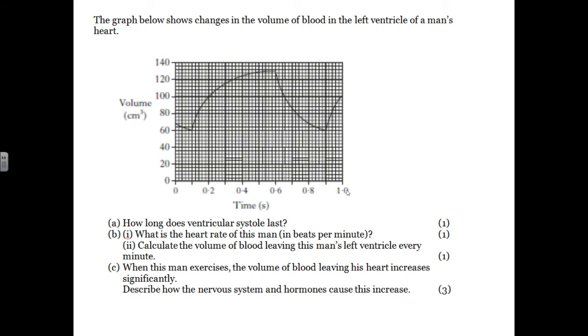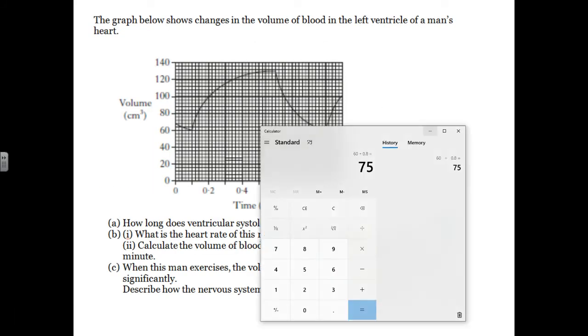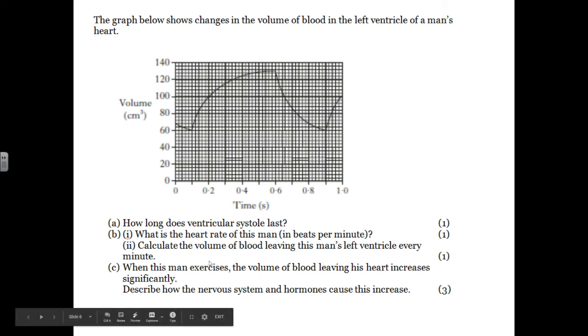Calculate the volume of blood leaving the man's left ventricle every minute. So we are going from here, which looks to be about 130, down to here, which looks to be 60. So we've got 70 centimetres cubed of blood multiplied by his heart rate, which we said was 75. So 75 multiplied by 60, so it would be 4,500 mils or 4,500 centimetres cubed per minute.